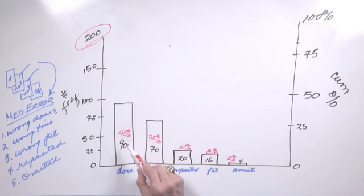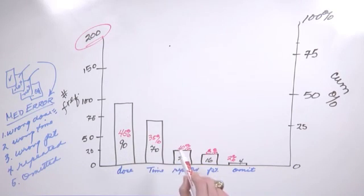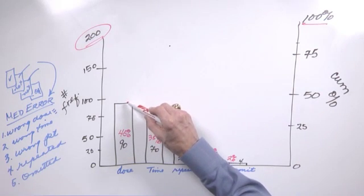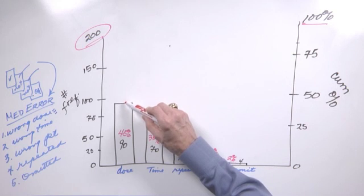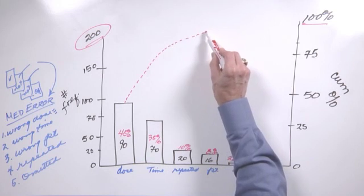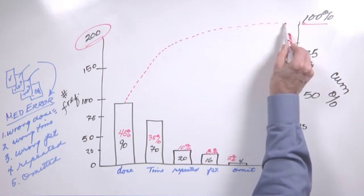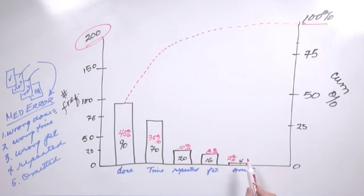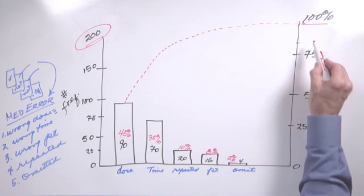Now what we do is start accumulating these. So 45 plus 35 plus 10, 8, 2, eventually all add up to 100. We start to make a curve coming off this first bar, and then we add the next one to it. It starts to rise quickly, but then it starts tapering off because the percentages get smaller.